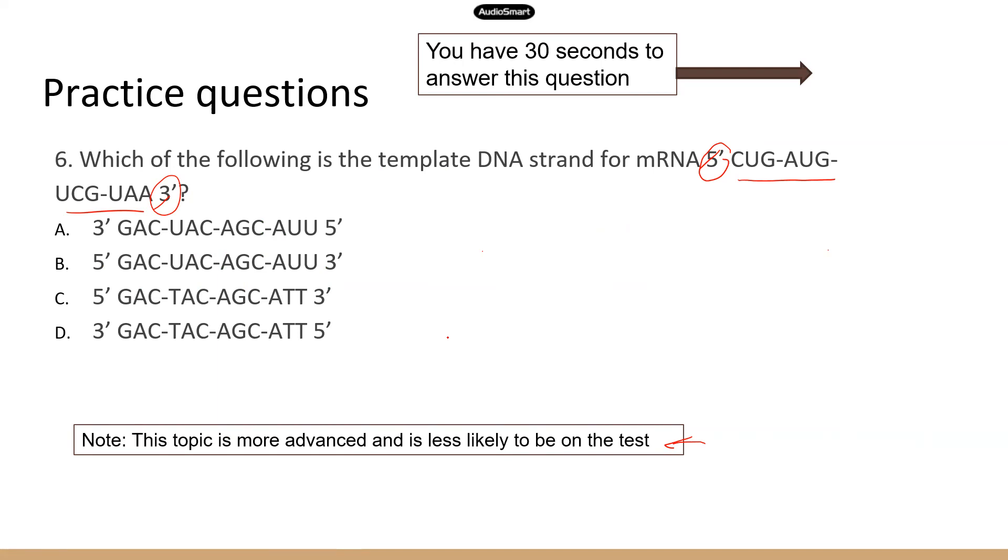Now, I say this topic is more advanced and is less likely to be on the test because of two things. First is the direction, which can be very confusing. And I don't think direction would be a big part of the test question. Another thing is I gave you the mRNA sequence, and I want you to figure out the DNA sequence, which is kind of going backwards. So those are the two things that I think are a little bit tricky than probably most of the test questions.